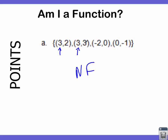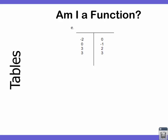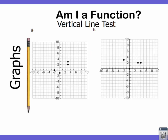Looking at another example: if we spot the same x value appearing twice — for instance, two 3s — that's a red flag. This is not a function because the same x value maps to two different y values. A mapping with 3 inputs going to 4 outputs where one input goes to two different outputs is also not a function. Similarly, the set (-2,0), (0,-1), (3,2), (3,3) is not a function because the x value 3 maps to two different outputs.